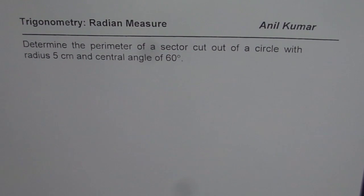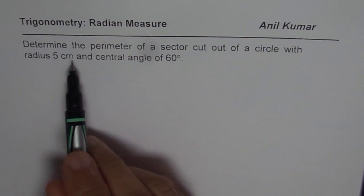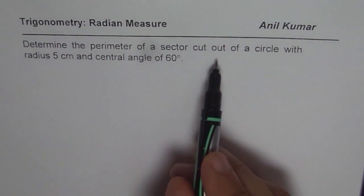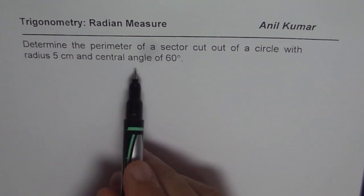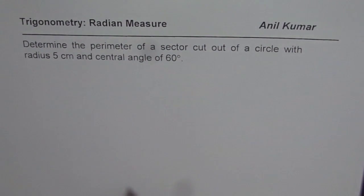I am Anil Kumar and in this video we will try to understand arc length of a sector. The question here is, determine the perimeter of a sector cut out of a circle with radius 5 cm and central angle of 60 degrees.